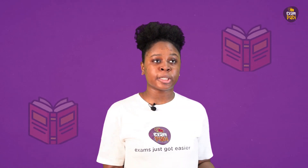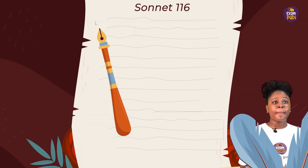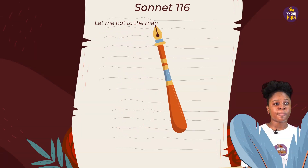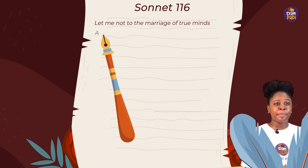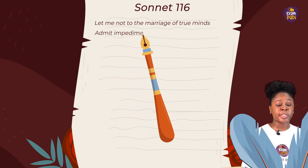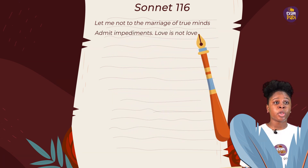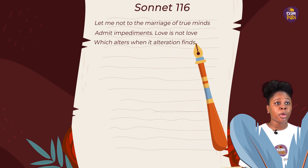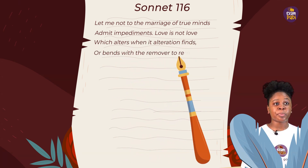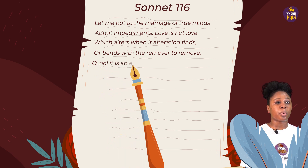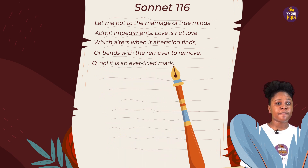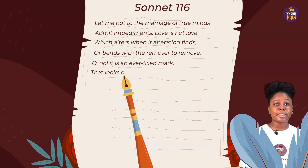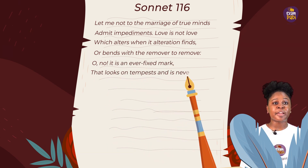Here is an example of a popular Shakespearean sonnet called Sonnet 116. "Let me not, through the marriage of true minds, admit impediments. Love is not love which alters when its alteration finds, or bends for the remover to remove. Oh no, it is an ever-fixed mark, that looks on tempest and is never shaken."